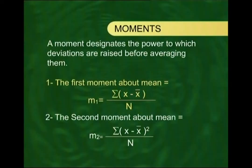The second moment about the mean, m2, is given by σ(x − x̄)² / n. This formula is not new — it is exactly the same as the variance. If you take the positive square root of this quantity, you obtain the standard deviation.